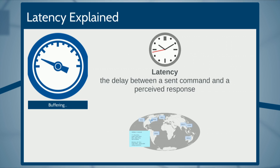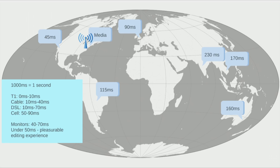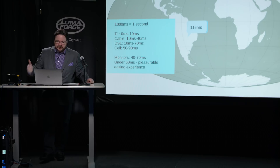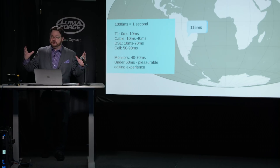The other challenge is latency — the delay between a send command and a perceived response. Here's a chart I love to show. If we have a data center in New York City but I'm across the country in LA, that's 45 milliseconds — and that's with a pristine connection. Add the free modem from Comcast or the Netgear router from Best Buy on discount, and those all add levels of latency. Depending on your connection — T1, cable, DSL, cell — all of those add more. It becomes compounded, like compound interest on a credit card.